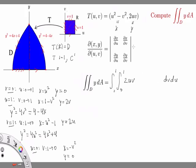Now we calculate really the absolute value of the Jacobian. So the Jacobian is the determinant of this matrix of partial derivatives of T. For instance, the partial of x with respect to u is 2 times u, and the partial of x with respect to v is negative 2v. Then partial of y with respect to u is 2v and with respect to v is 2u.